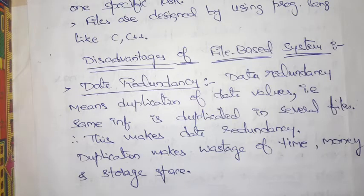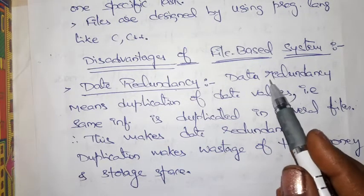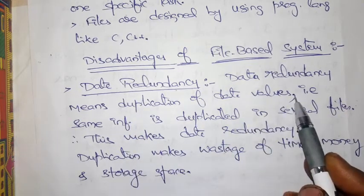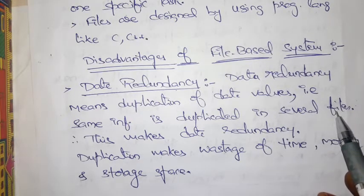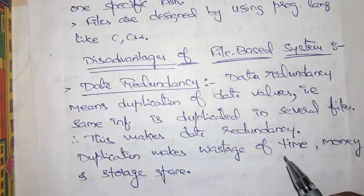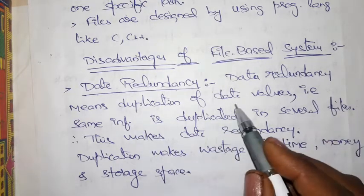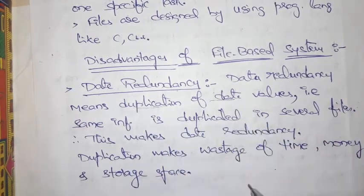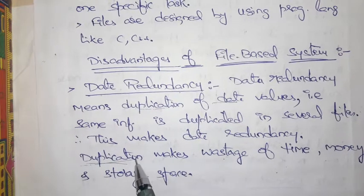The first drawback is data redundancy. Data redundancy means duplication of data — the same information is duplicated in several files. This makes the data redundant because the same information appears in different files in different ways. Data redundancy means the same data is appearing in multiple files.